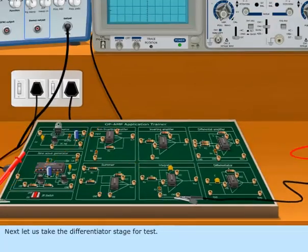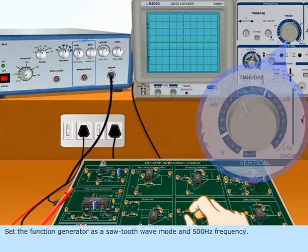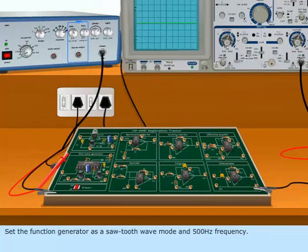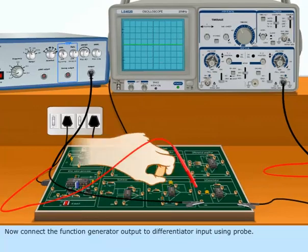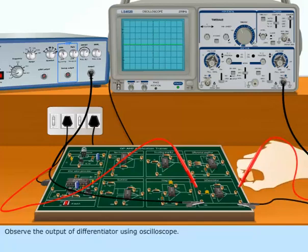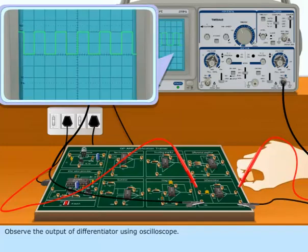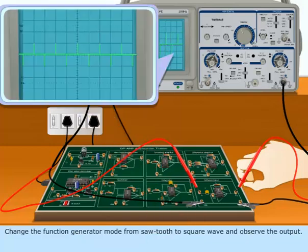Next, let us take the Differentiator stage for test. Set the function generator to Sawtooth wave mode at 500 Hz frequency. Connect the function generator output to the Differentiator input using a probe. Observe the output of the Differentiator using the Oscilloscope. Change the function generator mode from Sawtooth to Square Wave and observe the output.